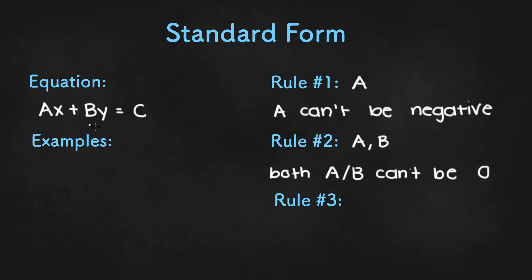But if both A and B were 0, then both of these terms would be 0 and we would have 0 on the left-hand side equals C, and it will most likely not be true.